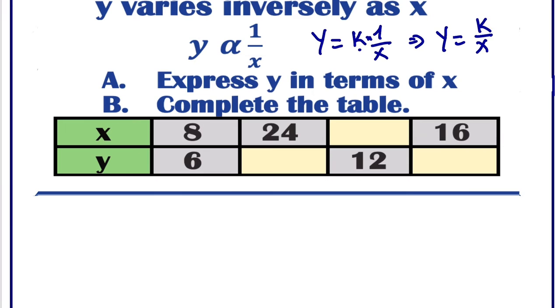So in order to look for k, we have to look carefully at the table where x and y is given, so that we can substitute the value of x, the value of y. This will enable us to get the value of k.